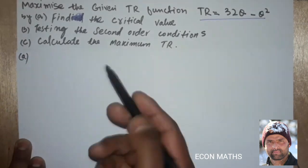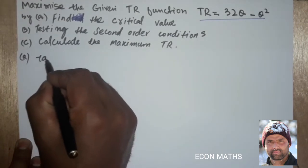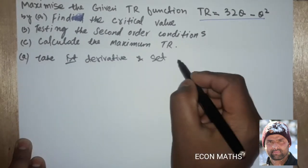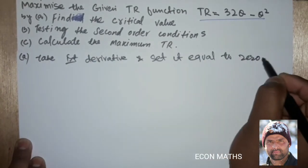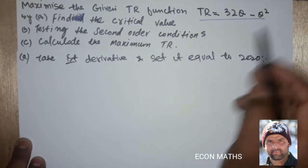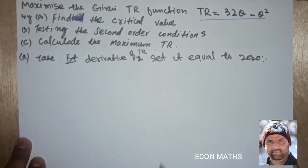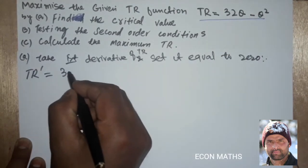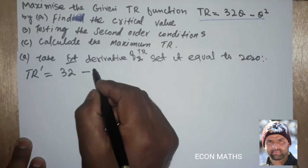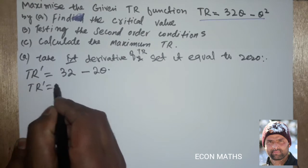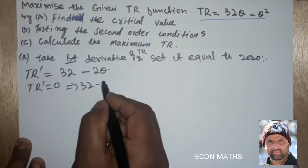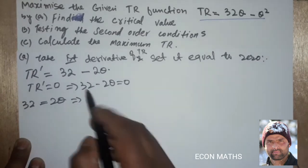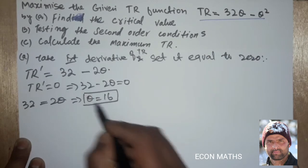We will solve the first part first. To find the critical value, we will take the first derivative of TR and set it equal to zero. The derivative of 32Q is 32, minus the derivative of Q squared, which is 2Q. Setting TR prime equal to zero gives us 32 minus 2Q equals zero, which means 32 equals 2Q, so Q equals 16. Q equals 16 is our critical point.